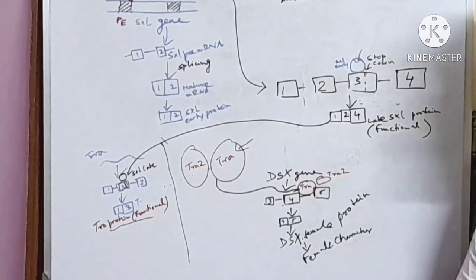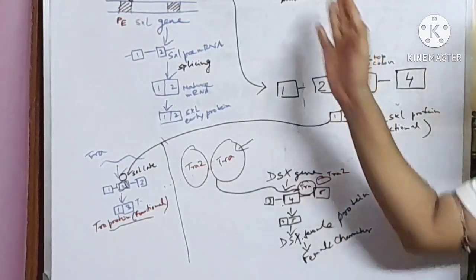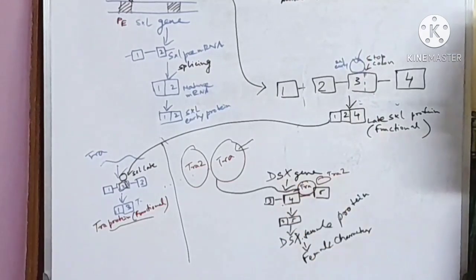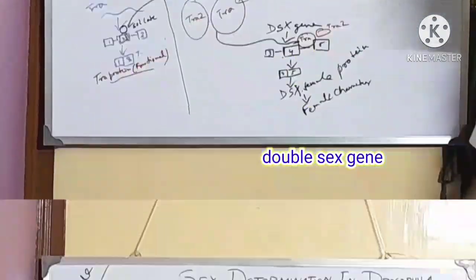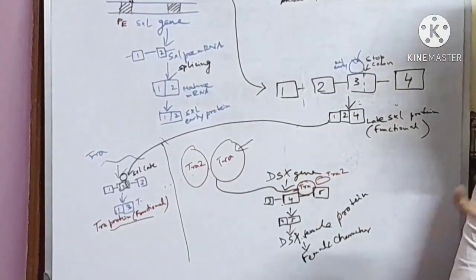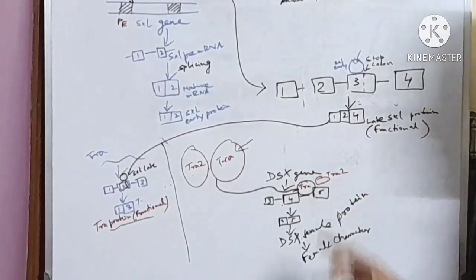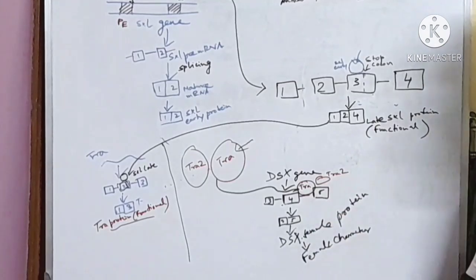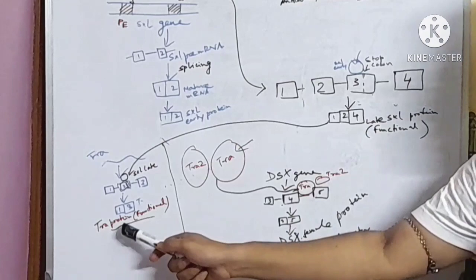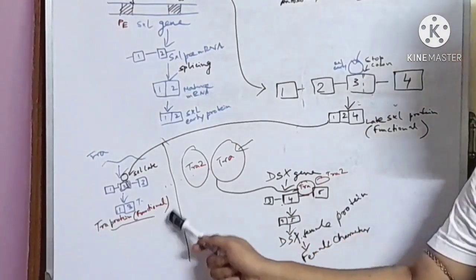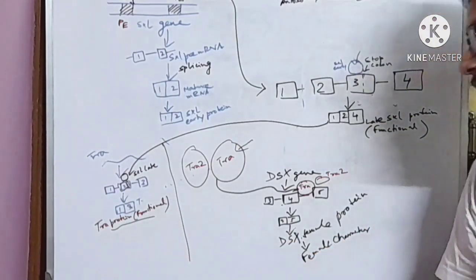Another important gene that is associated with sex determination is DSX gene which stands for doublesex gene. This DSX gene is a sex determination gene. It controls the phenotypic character of the fly.